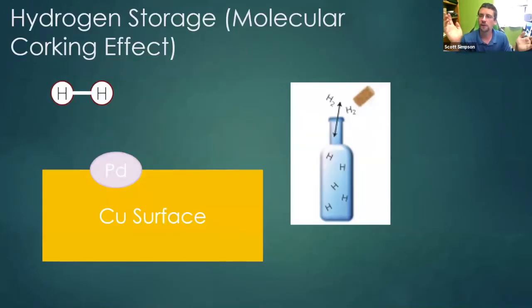So the way that we do this is through something called the molecular corking effect. So hydrogen, it's not found as just H by itself. It's found as H2. And what we can have is something called a single atom alloy, where you have a catalytically active metal. In this case, it's that palladium atom.